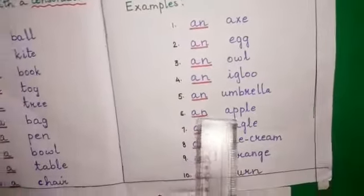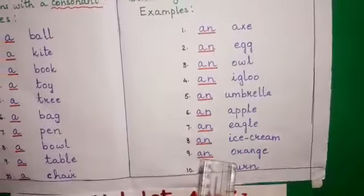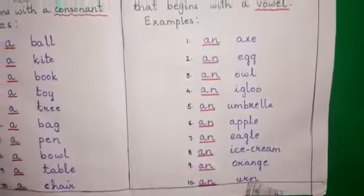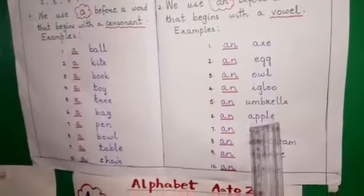An umbrella, an apple, an eagle, an ice cream, an orange, an urn. So the first letters again over here are all vowels.